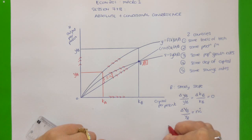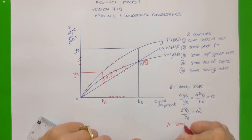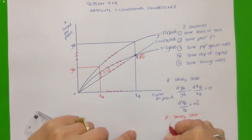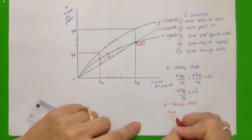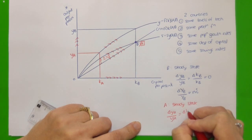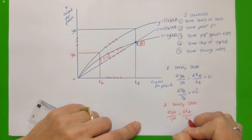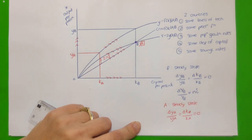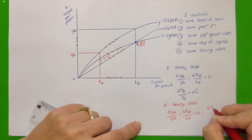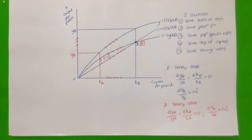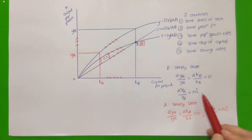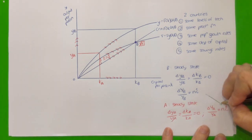When country A reaches that steady state, their change in output per person will equal their change in capital per person, and that will equal zero. Furthermore, the change in total output in country A will also equal N percent per annum in steady state. So the rate of growth of output in steady state for both country A and country B will be the same, because they share the same population growth rate.